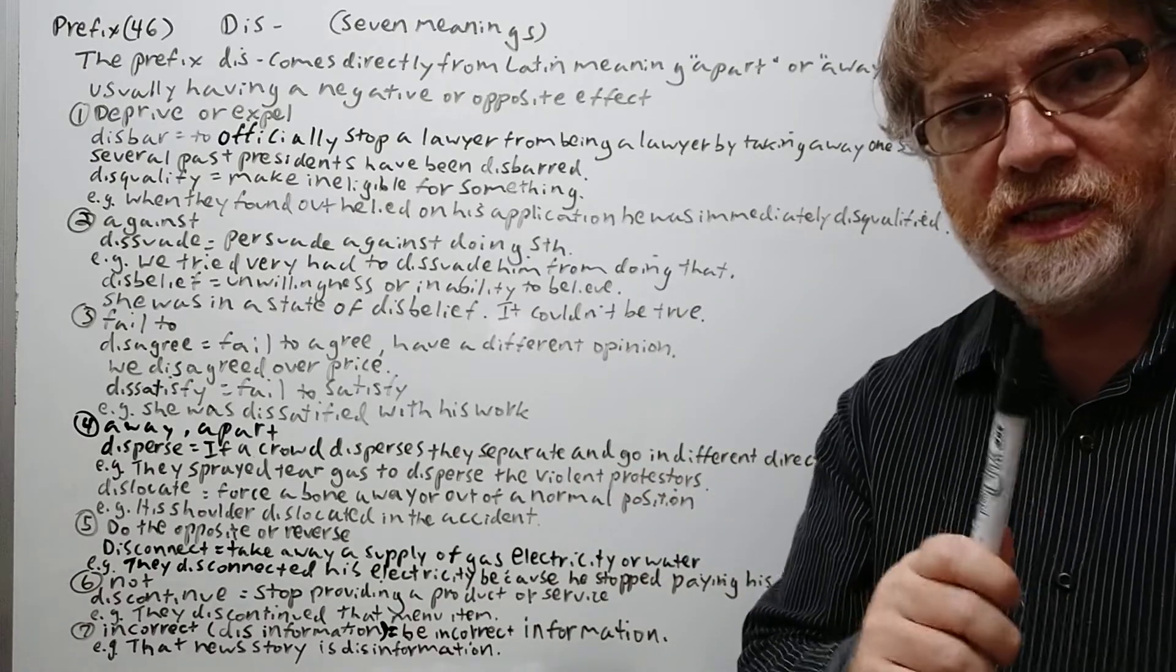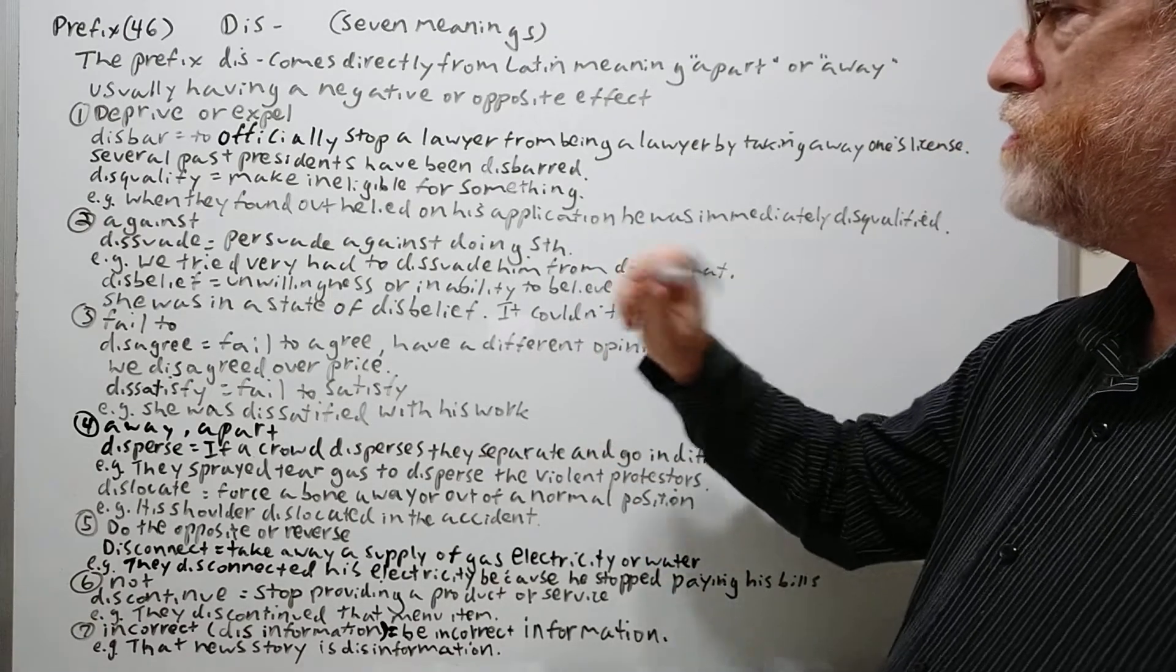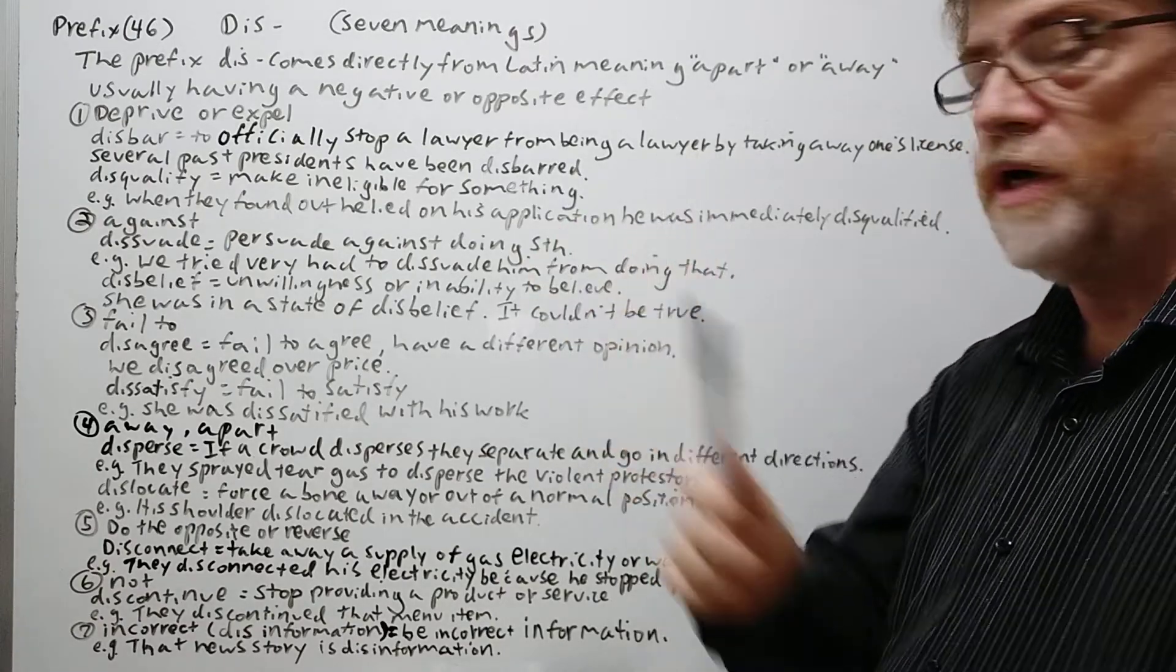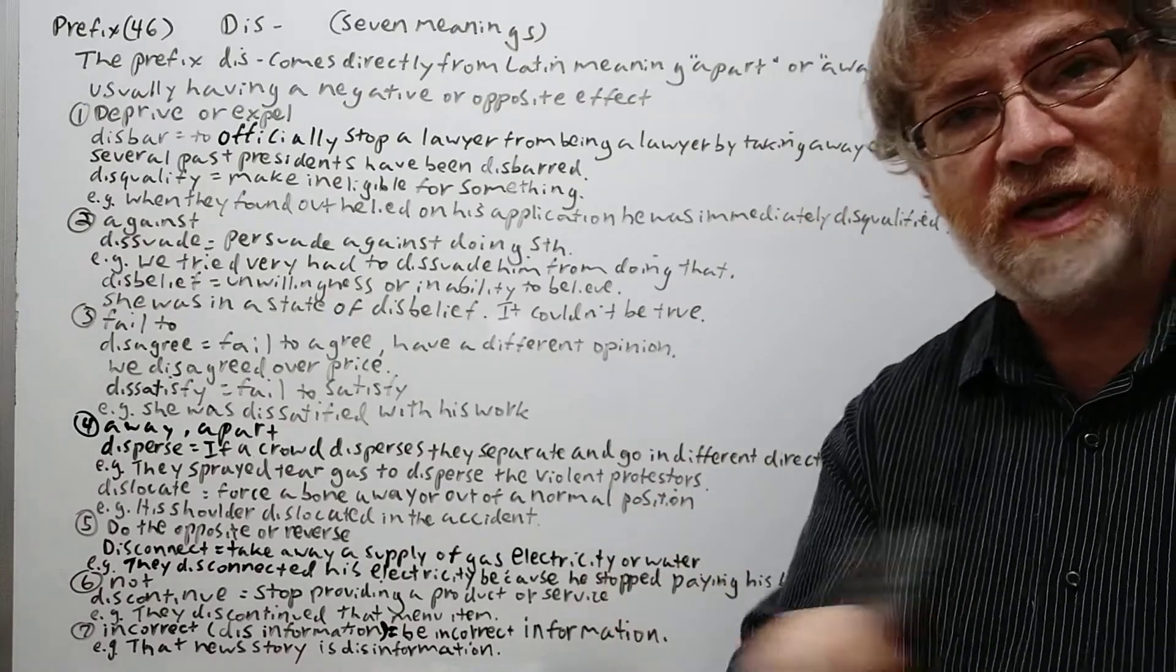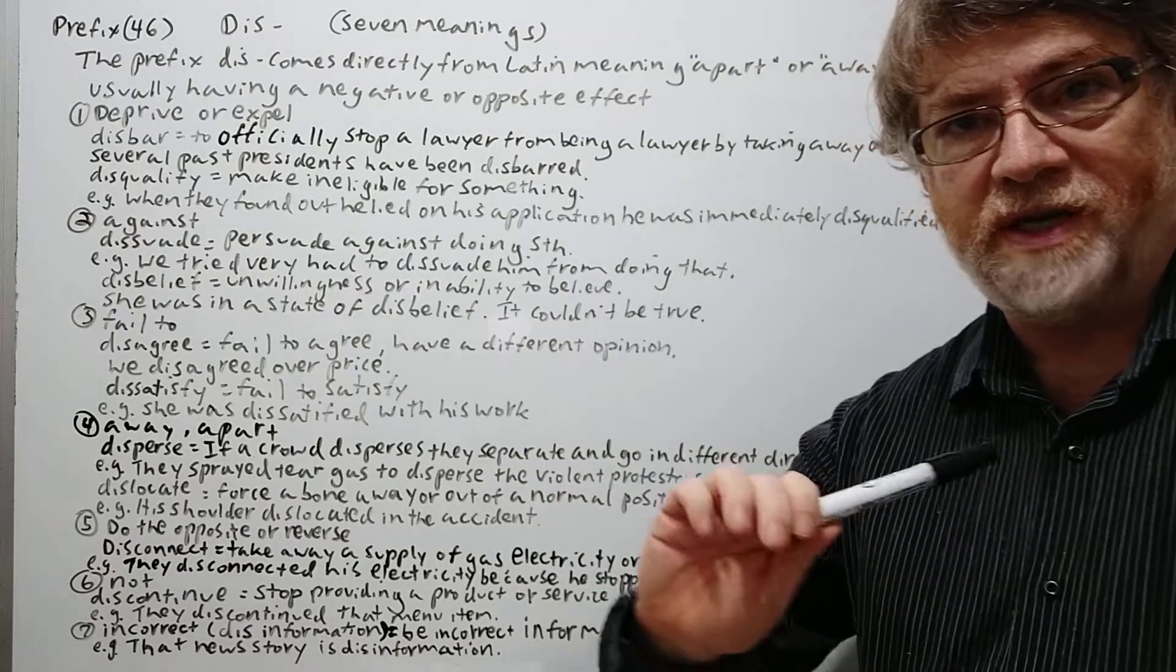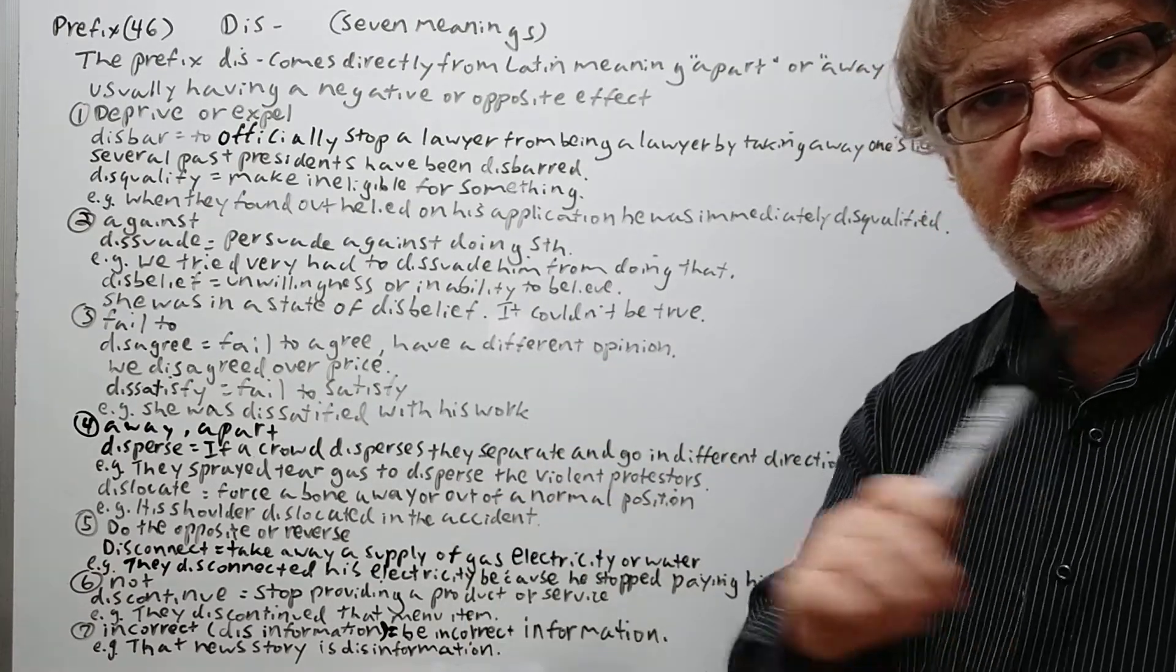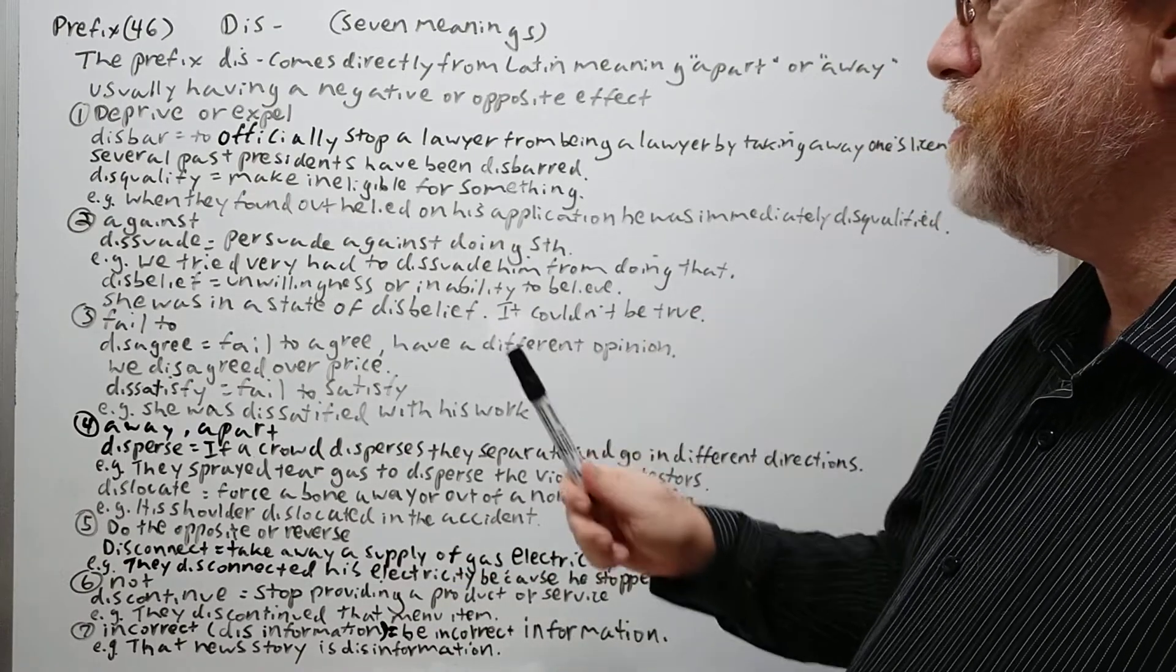Our first meaning is either to deprive or expel. To disbar of course means to officially stop a lawyer from being a lawyer, usually by taking away one's license. So if you take away the license, you're doing both—you're depriving him of being a lawyer and you're kind of expelling him from law basically.